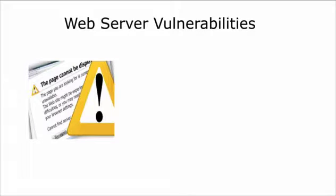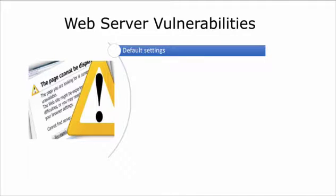Let's look at some web server vulnerabilities. Default settings — pretty much a lot of the hacking of web servers that happens is a result of sys admins leaving default settings such as default usernames, default passwords, default file allocations, file settings, and file execution types. This is actually very low-hanging fruit. A very easy way to hack a web server is by trying default settings, because sys admins haven't changed them — and you'd be surprised how many are out there.